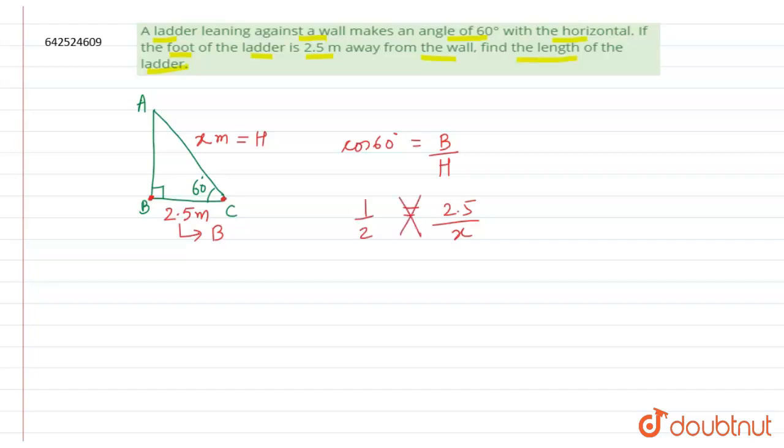So x is equals to 5 meter. Clear. So that means the length of the ladder is 5 meter.